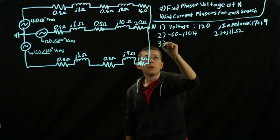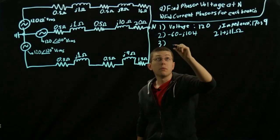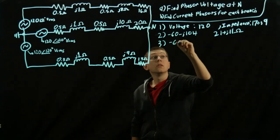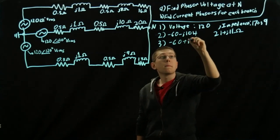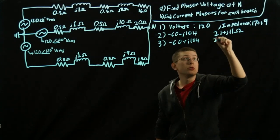And for our third, we have negative 60 plus J104 volts. And an impedance of negative 20 plus J10.